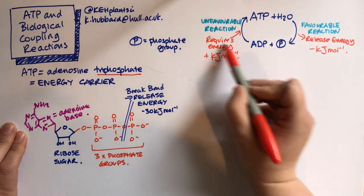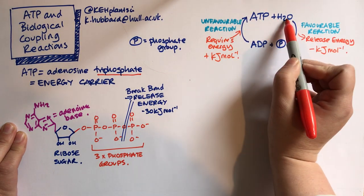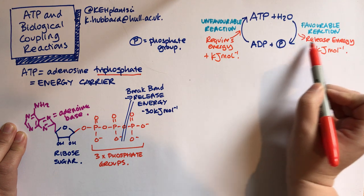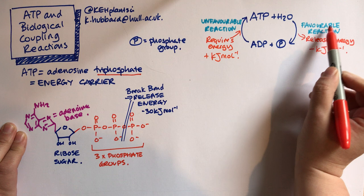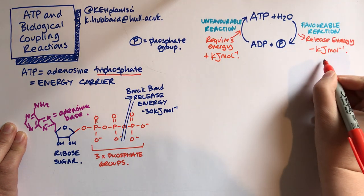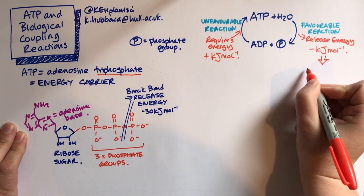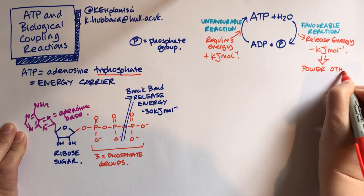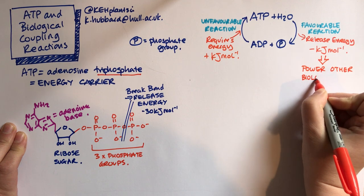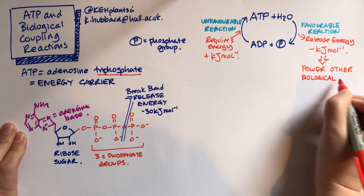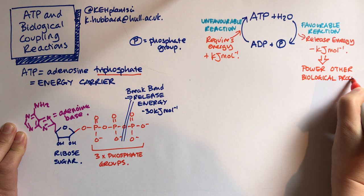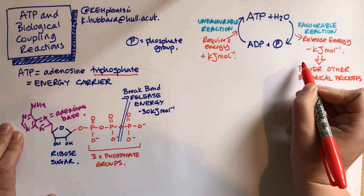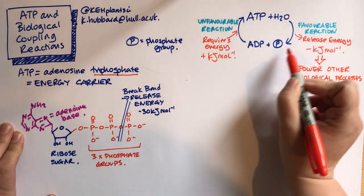So we have this nice little reaction cycle. ATP plus water, if you hydrolyse that bond, you release a phosphate, you also release energy, and that is thermodynamically favourable. And that energy that we've released can be used to power other biological reactions or processes.